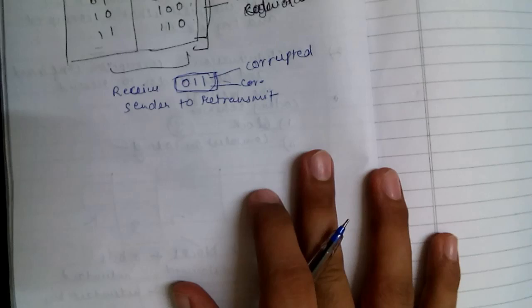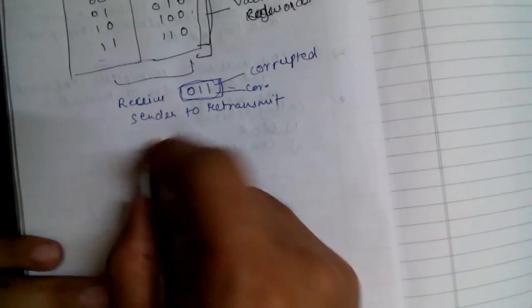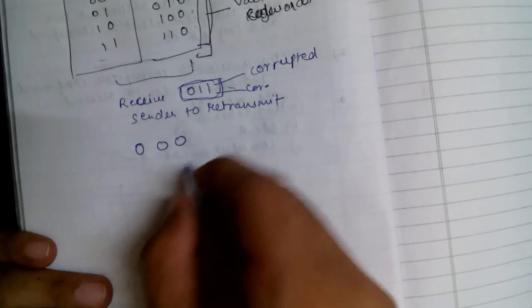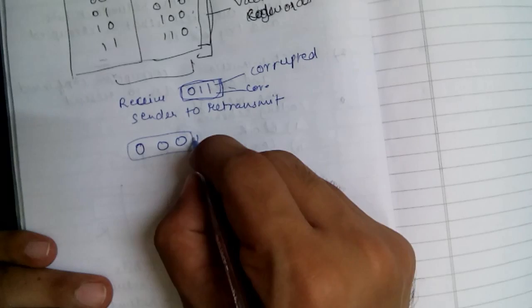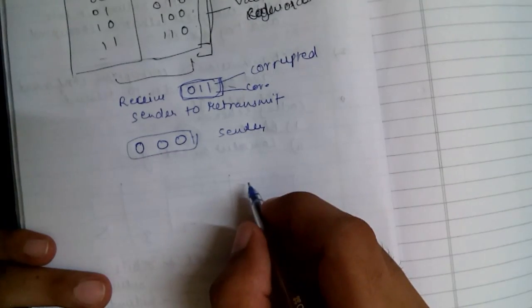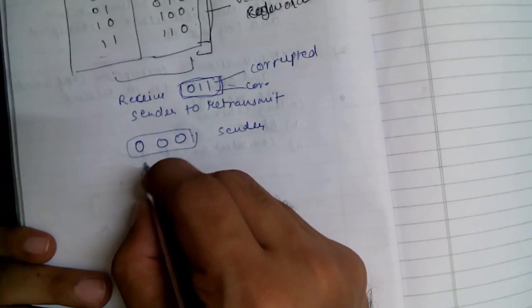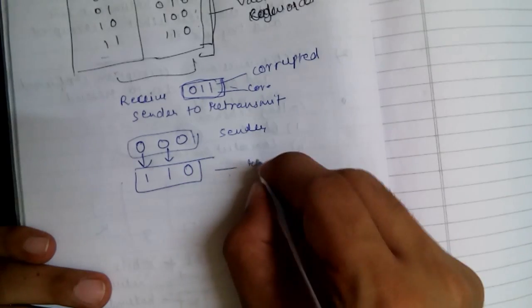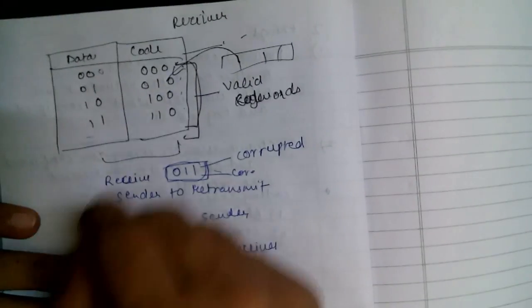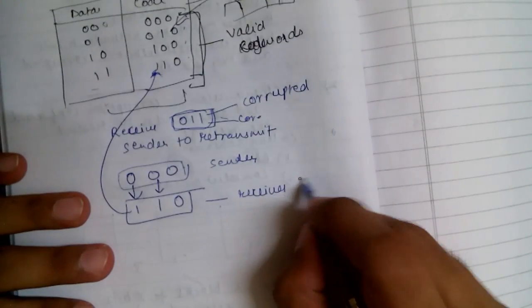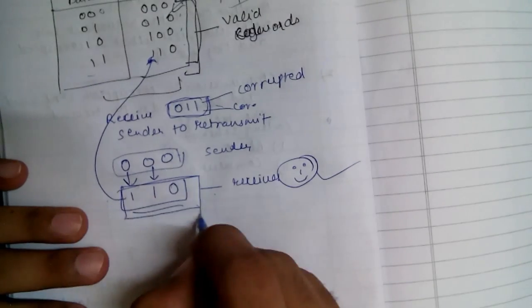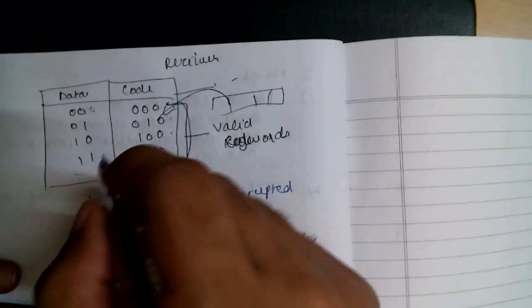However, there is a fault in this approach. If the original code word was 000 and two bits got corrupted — changing to, say, 110 — and that corrupted value also happens to be a valid code word in the table, the receiver will believe the data is uncorrupted. So if the corrupted data word is also present in the error detection table, the error remains undetected.